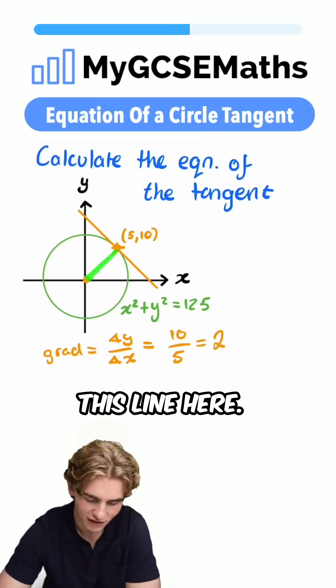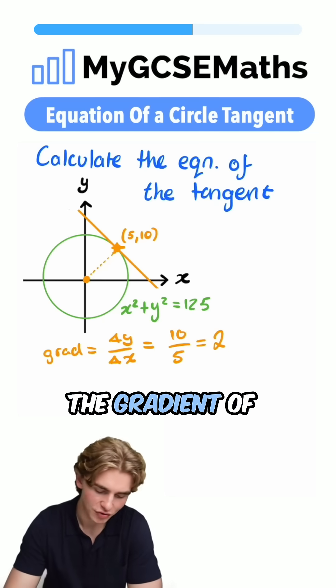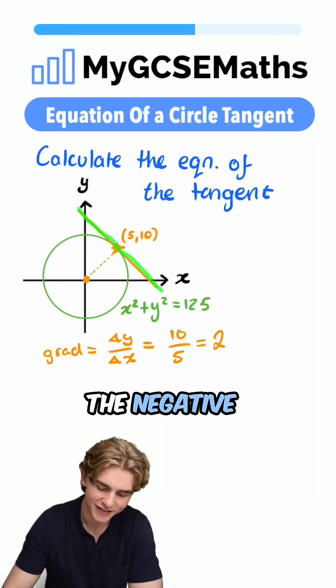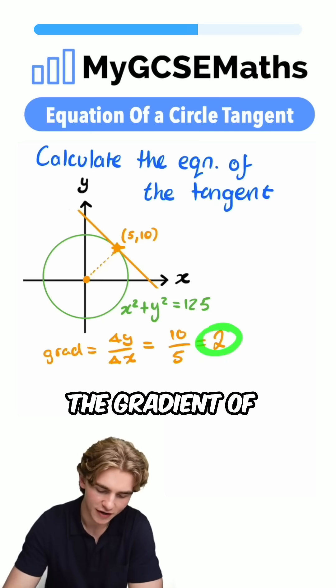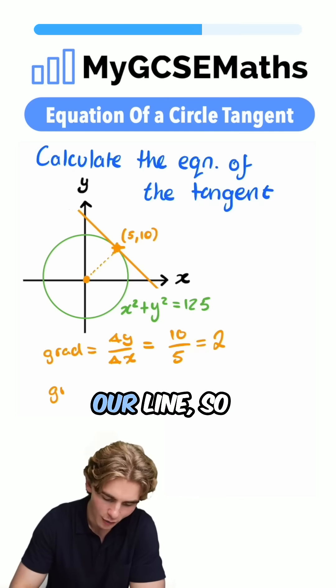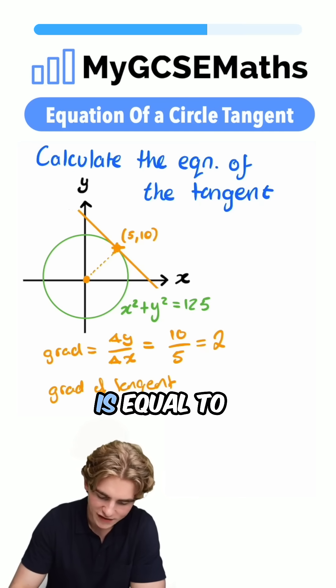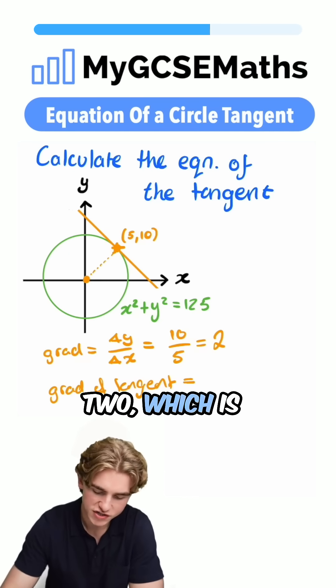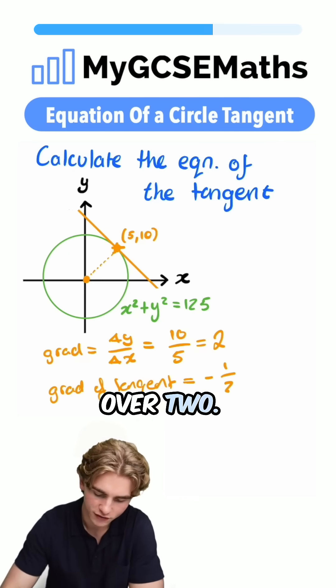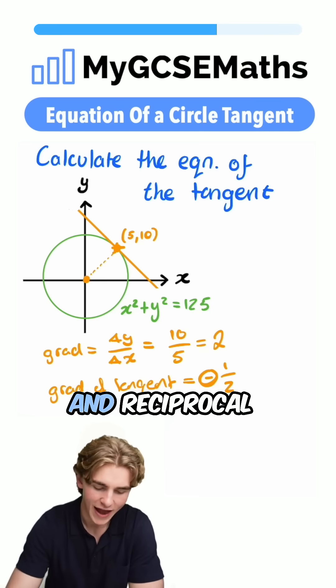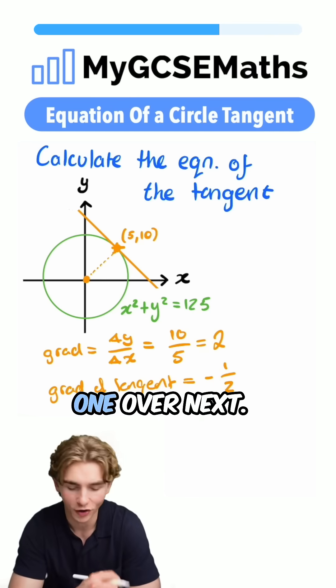Now we have the gradient of this line here. This is going to allow us to find the gradient of this tangent. It's going to be the negative reciprocal of the gradient of this line here. So we can say that the gradient of the tangent is equal to the negative reciprocal of 2, which is going to be -1/2. The negative reciprocal means it's negative and reciprocal just means we can take one over.